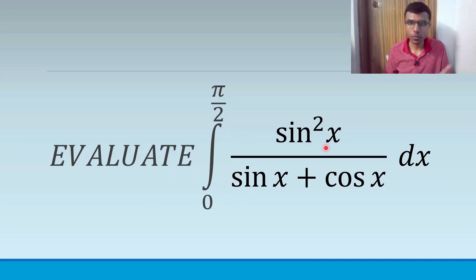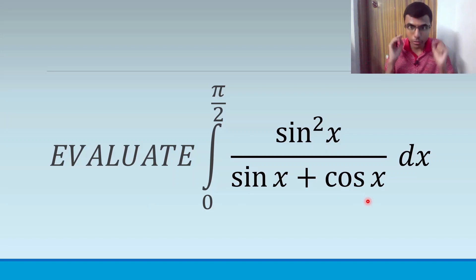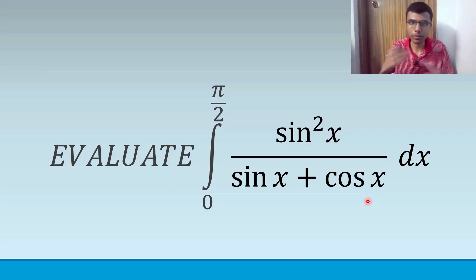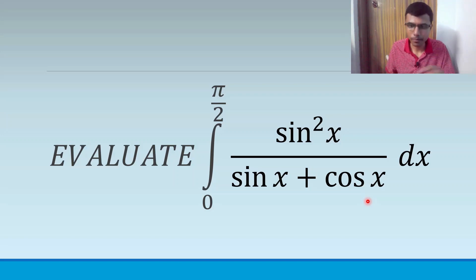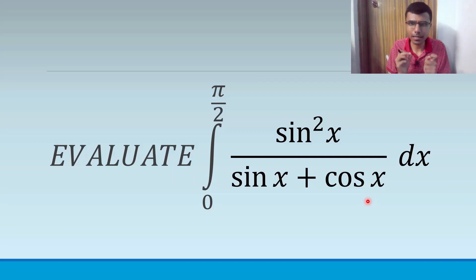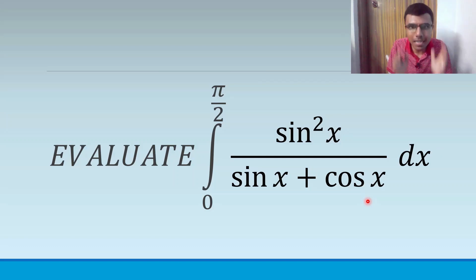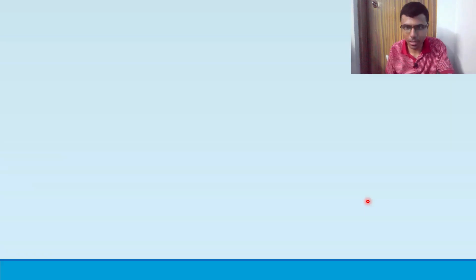Here I need to find out the integral from 0 to π/2 of sin²x divided by (sinx + cosx). I'm going to go a bit slow, but please stay with me. You can increase the video speed to 1.25 or 1.5 if needed. I'm going to follow the textbook method — it is a little lengthy and a little difficult, but I've tried my best to make it as easy as possible.